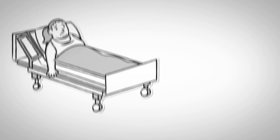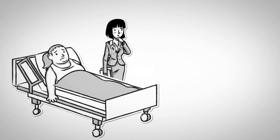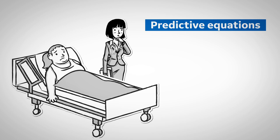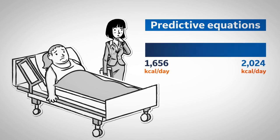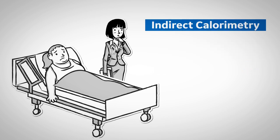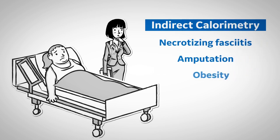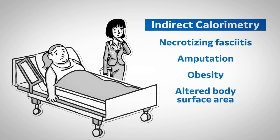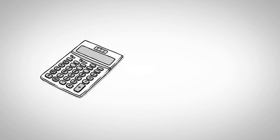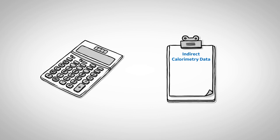How can we help? Well, we can think about how we're going to feed her as she recovers. We can use predictive equations, but look at that — we get calorie needs anywhere from 1,656 calories all the way up to 2,024 calories per day. That's quite a bit of variation. What about indirect calorimetry? Is she a good candidate? She is. So let's do our calculations based on indirect calorimetry data.